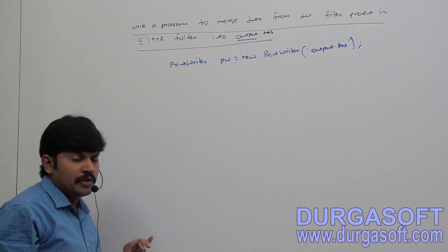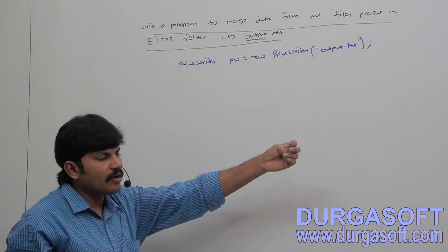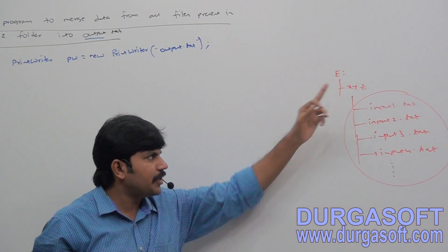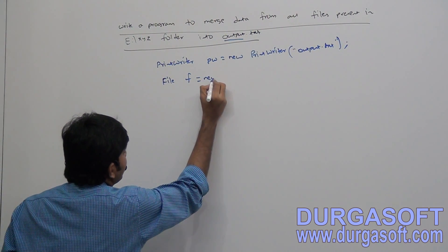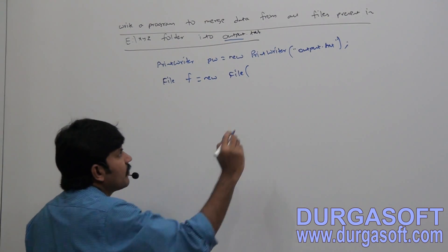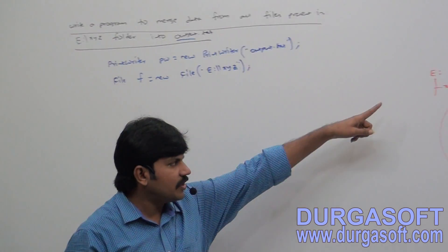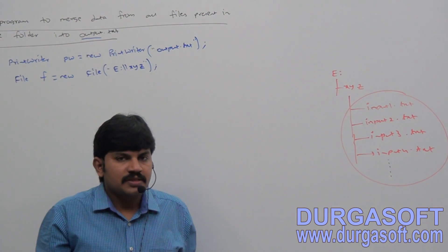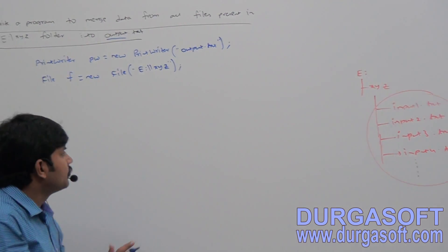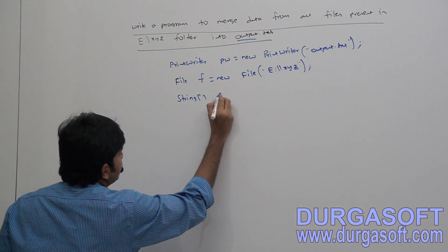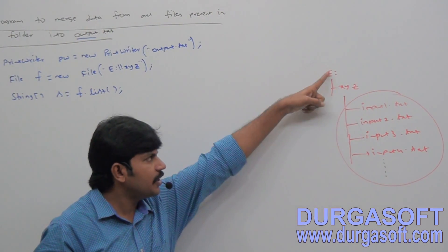Take very special care about this. I have to cover all files present inside E:\xyz. Create a File object to represent that directory: File f = new File("E:\\xyz"). Now, how many files are there in E:\xyz? We don't know. So list out all file names: String[] s = f.list(); — all file names present inside E:\xyz. We got them.